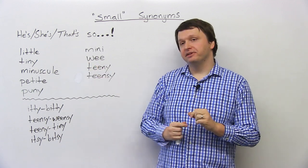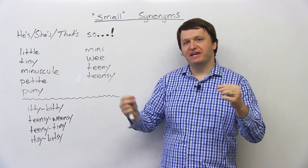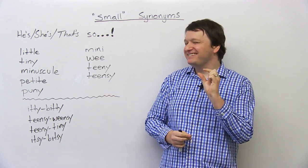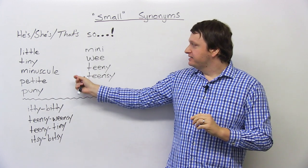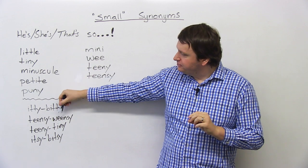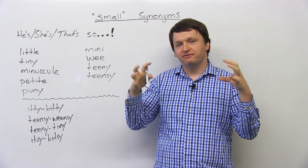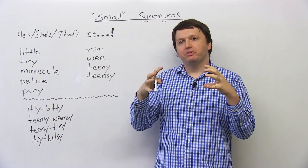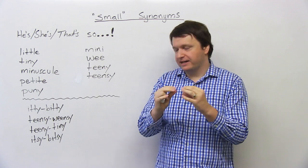So all three of these words, they use the sound ee, and you can stretch it out when you're saying it. A wee problem, a teeny problem, a teensy problem. And finally, we have one, two, three, four expressions where we're combining two different adjectives, and we're making them sound really cute and adorable and small and tiny.